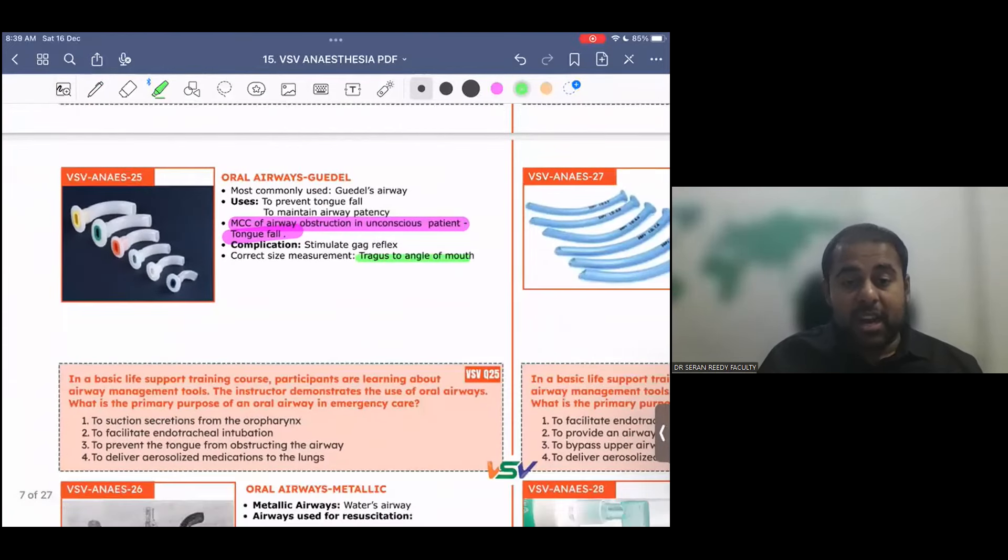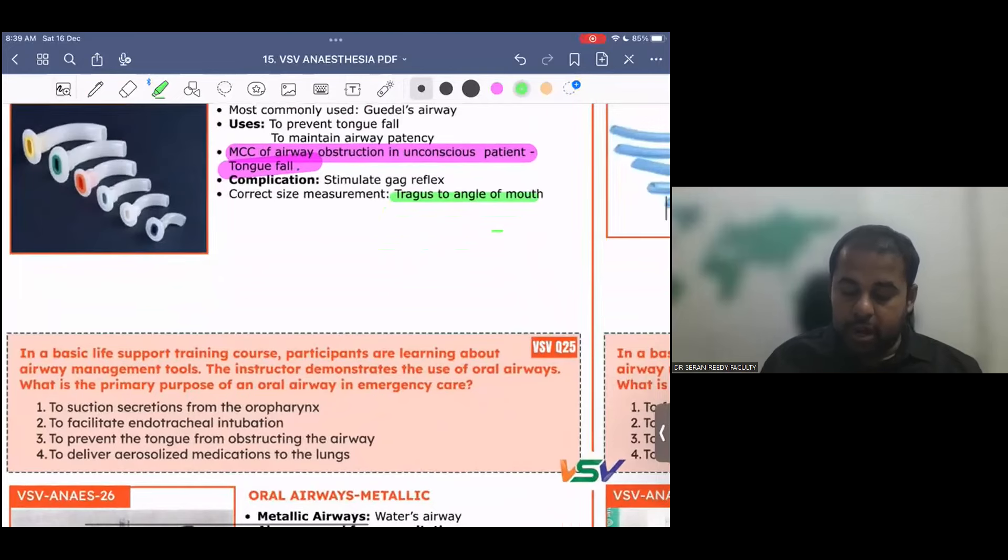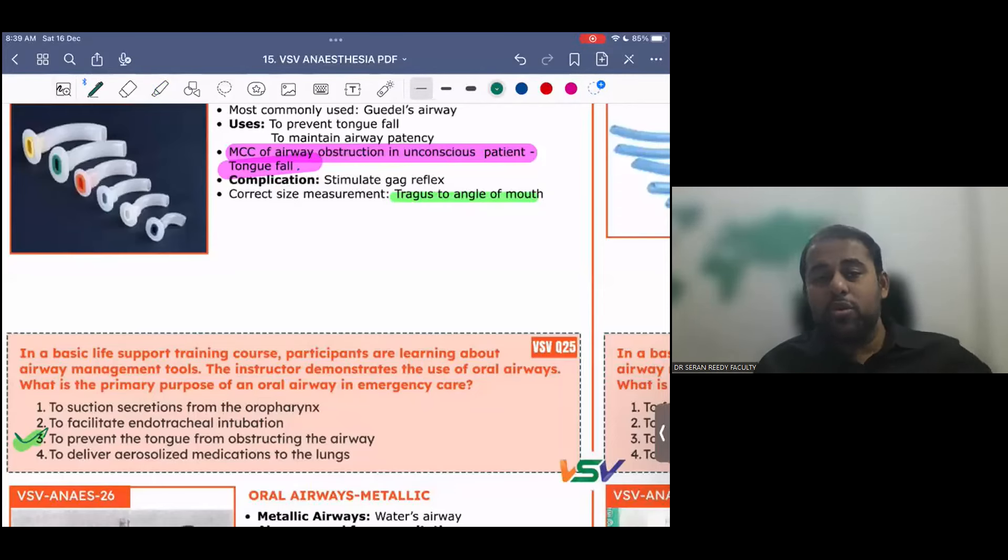In a basic life support training course, participants are learning about airway management tools. The instructor demonstrates the uses of oral airways. What is the primary purpose of an oral airway in emergency care? To suction the secretions from the oropharynx, to facilitate endotracheal intubation, to prevent tongue from obstructing the airway, and to deliver aerosolized medications to the lungs. Very good. And the answer is, to prevent the tongue from obstructing the airway. To suction secretions from oral airway, use the suction catheter, and to facilitate endotracheal intubation, you use a laryngoscope. And to deliver aerosolized medications, there will be special devices, like where it can be delivered to the nebulizers.